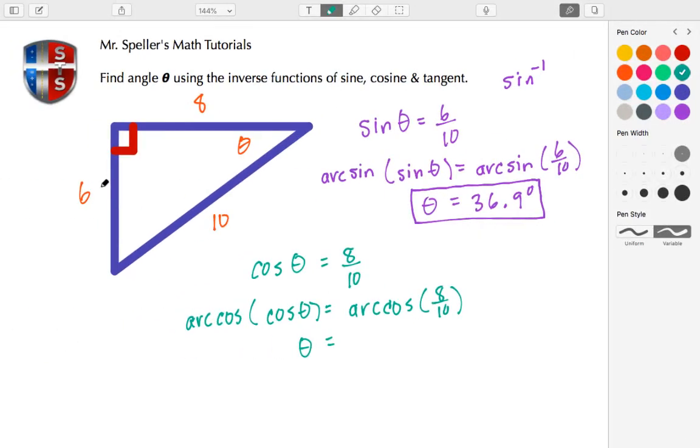Alright, and now last but not least, let's go ahead and do the tangent. Let's switch to this color here and let's take the tangent of theta. And we know that tangent is the opposite over the adjacent, so that's going to be six over eight.